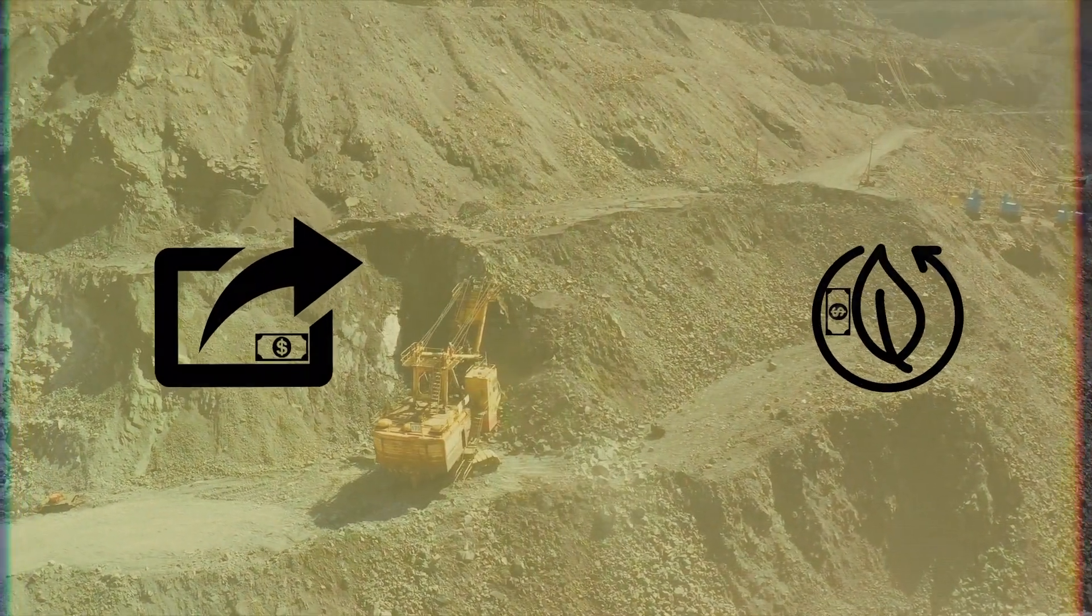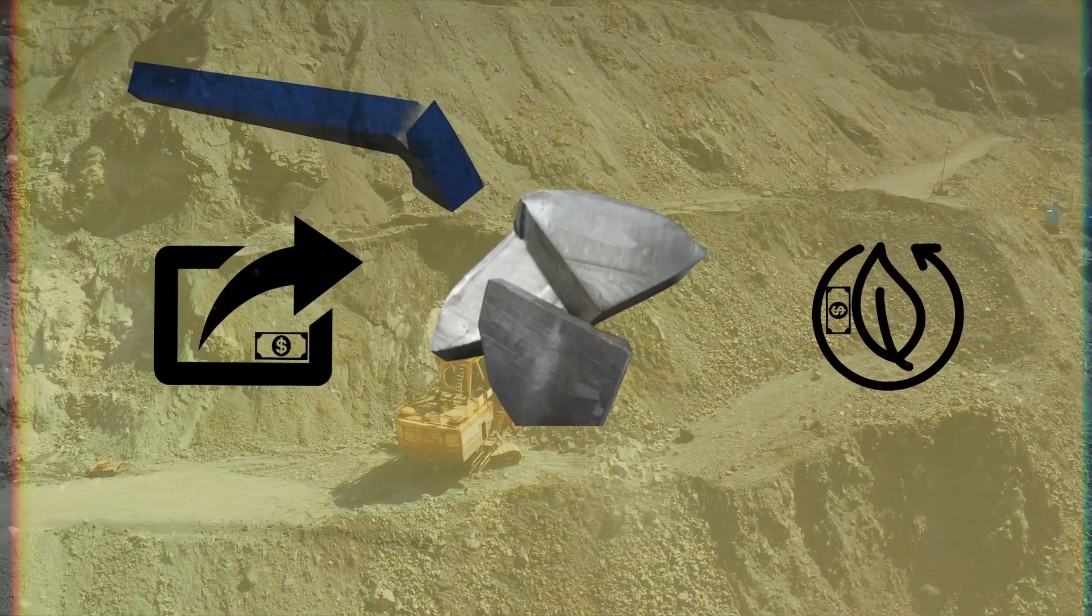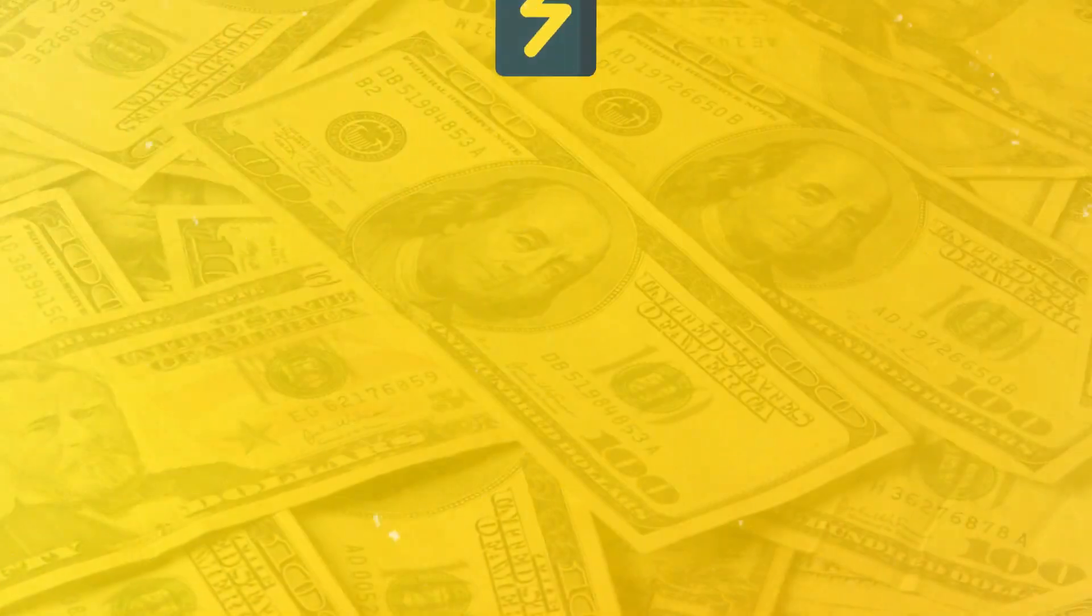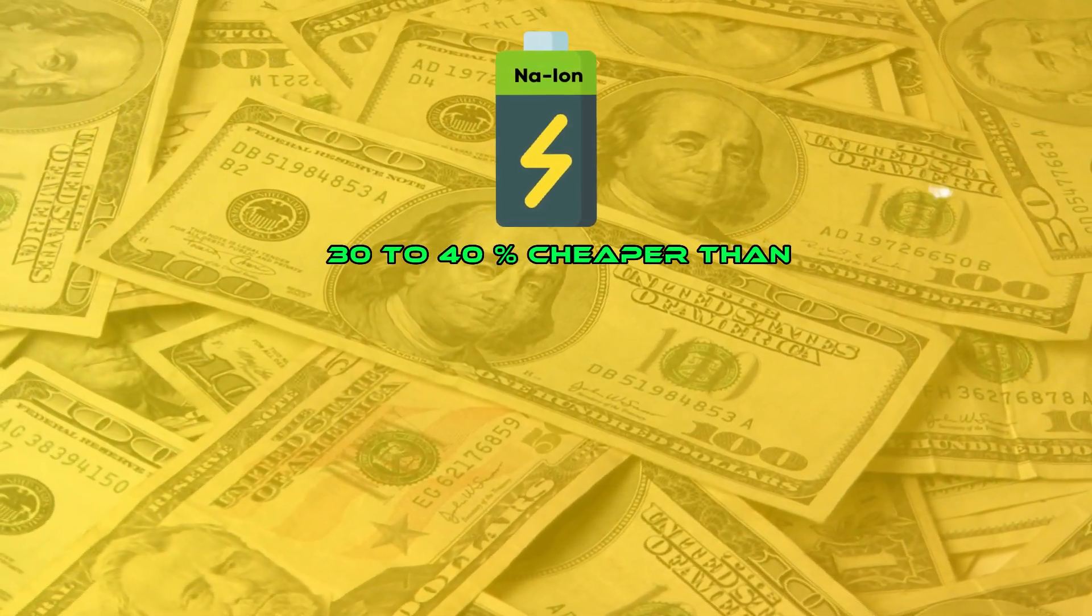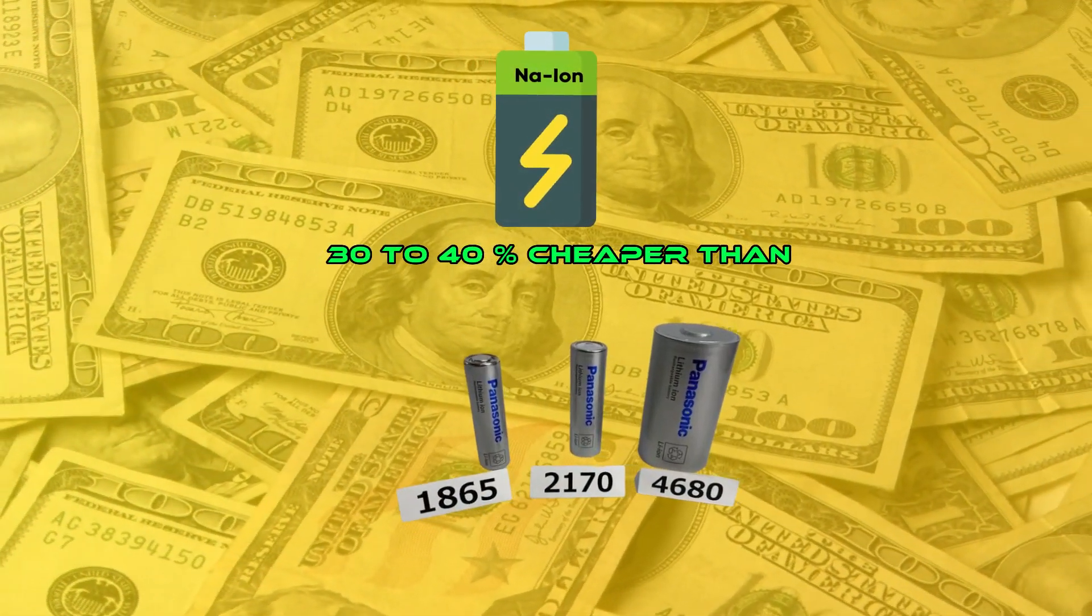Even the extraction and purification costs associated with sodium are very low. If we add all these cost benefits, an average sodium-ion cell can be estimated to be 30 to 40 percent cheaper as compared to the lithium-ion cell.